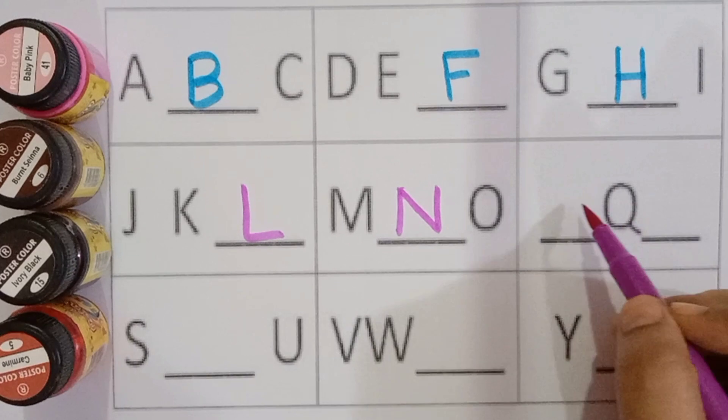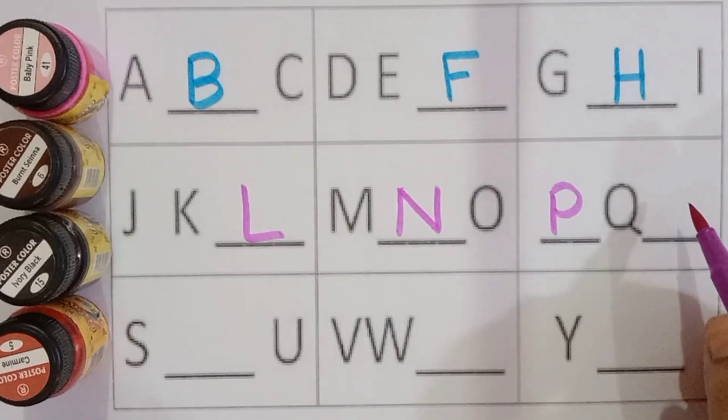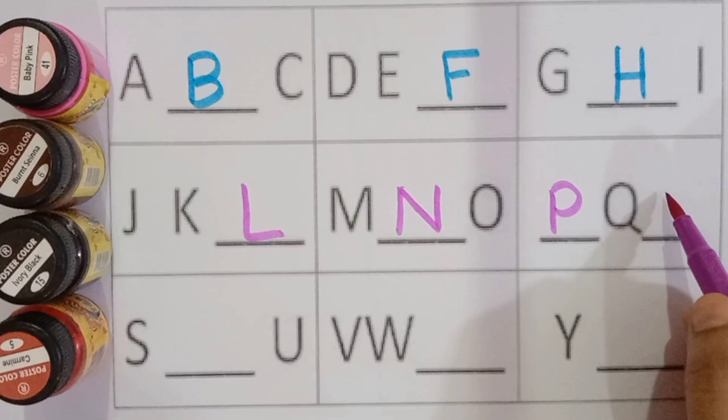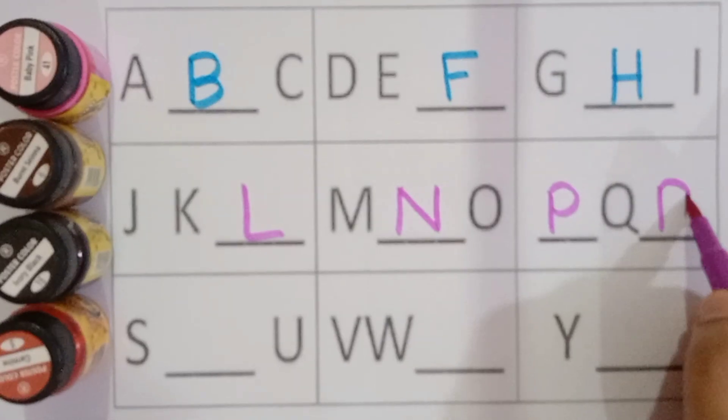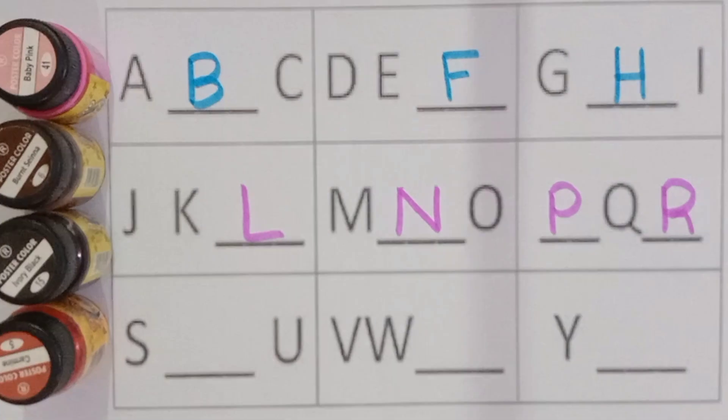N for nest, O for orange, P for parrot, Q for cucumber, R for rose.